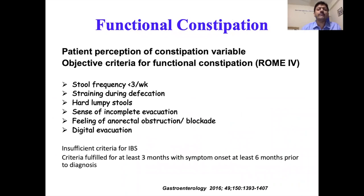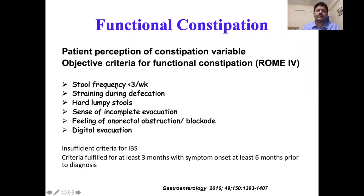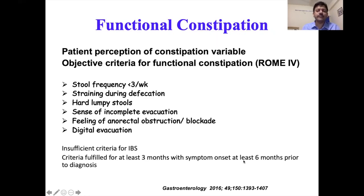Moving on to how we define functional constipation: since patient perception is variable, it is good to have an objective assessment. The most commonly used criteria are the Rome IV committee criteria. The elements include: stool frequency, straining during defecation, hard and lumpy stool, sense of incomplete evacuation, feeling of anorectal blockade or obstruction, and use of digital maneuvers to evacuate stool. If two of these six are present for at least three months, with symptom onset at least six months before diagnosis, the patient is defined as having functional constipation.